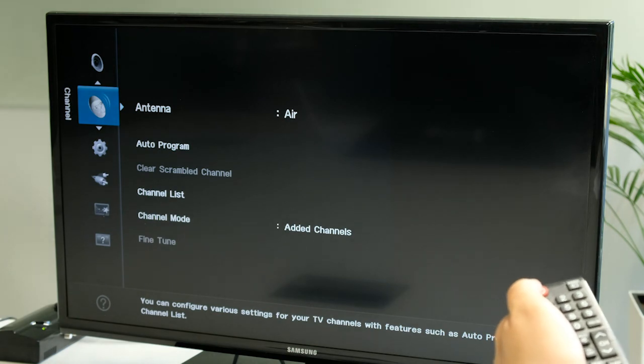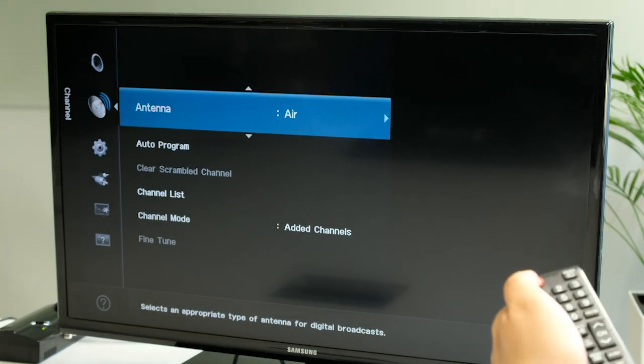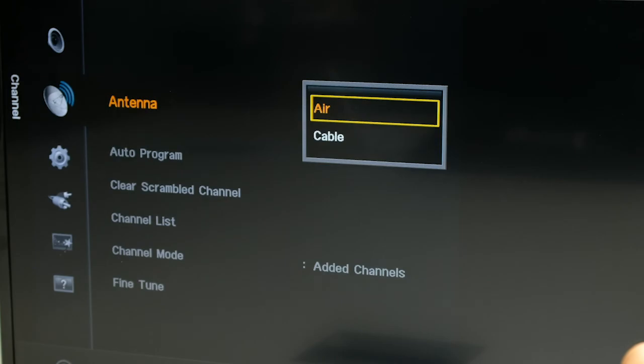Then, still in your settings menu, scroll down to Channel and select Antenna and Air, not Cable.